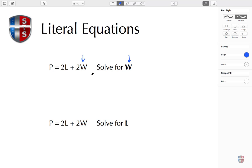That means we're going to make sure that W stays in place. The first step is to subtract 2L from both sides. Doing so, I end up with P minus 2L equals 2W. This here cancels on that side.